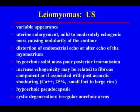The sonographic findings of leiomyoma are variable. They may present as uterine enlargement, a mild to moderately echogenic mass causing nodularity of the contour, distortion of the endometrial echo, or a hypoechoic solid mass with poor posterior transmission. Increased echogenicity may relate to the fibrous component. Posterior acoustic shadowing may be due to calcifications — 25% of fibroids will have calcifications. Some may show a hypoechoic pseudocapsule, and occasionally cystic degeneration with irregular anechoic areas may be present.